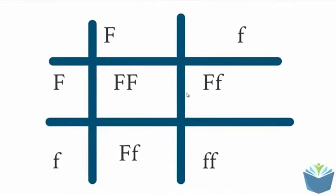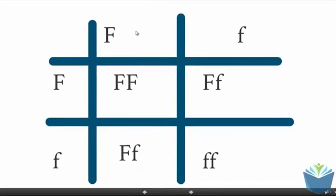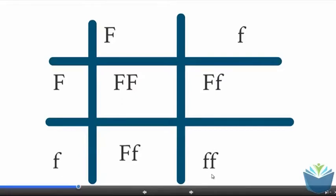Here, you have a Punnett square. I've just drawn the gametes along the top two here and the gametes for the father's sperm here. These are the possibilities that you can get for this genetic cross. These are the different genotypes that you can get.